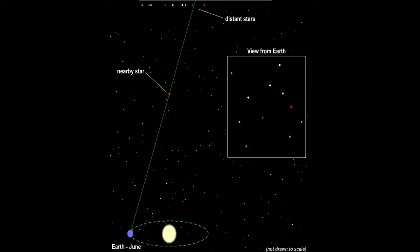Stellar parallax occurs for the same basic reason. This animation shows that as Earth orbits the Sun, the positions of nearby stars appear to shift relative to the positions of more distant stars. Stellar parallax therefore represents direct proof that Earth orbits the Sun.